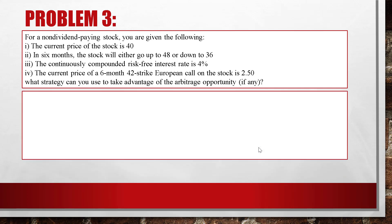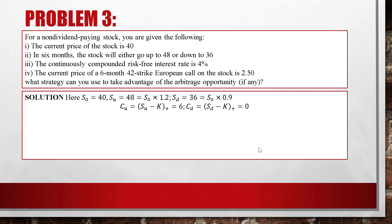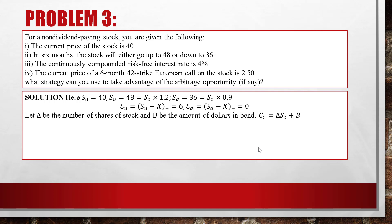This is similar to problem 1. Summarizing: S0 = 40, SU = 48 = S0 × 1.2, SD = 36 = S0 × 0.9. CU = 6, CD = 0. Let delta be the number of shares of stock and B the amount of dollars in bond. C0 = delta × S0 + B. We construct a linear system: CU = delta × e^(δH) × SU + B × e^(RH), and CD = delta × e^(δH) × SD + B × e^(RH).